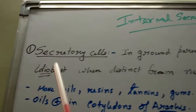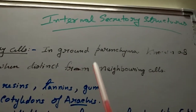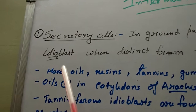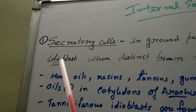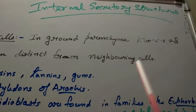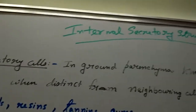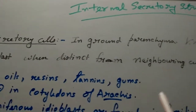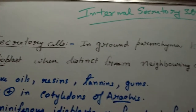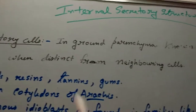First, secretory cells. They are found in ground parenchyma and are known as idioblasts. The condition for these cells to be called idioblasts is when they are distinct from their neighboring cells. You can call these cells idioblasts only when they are morphologically and anatomically distinct from their neighboring or adjacent cells.